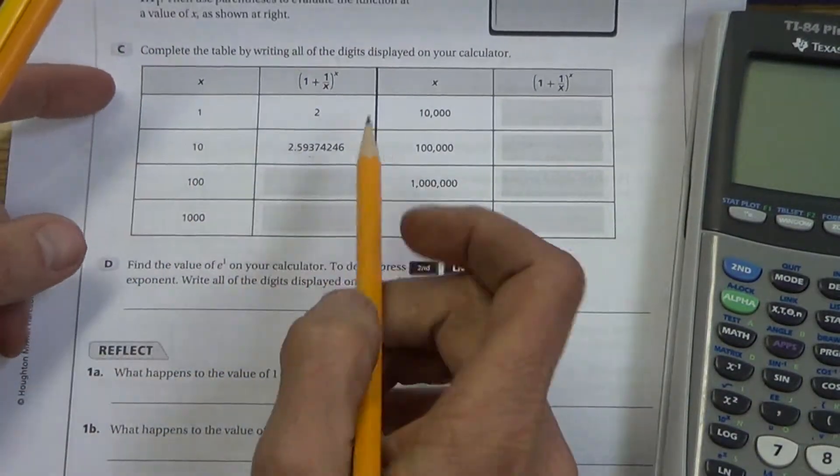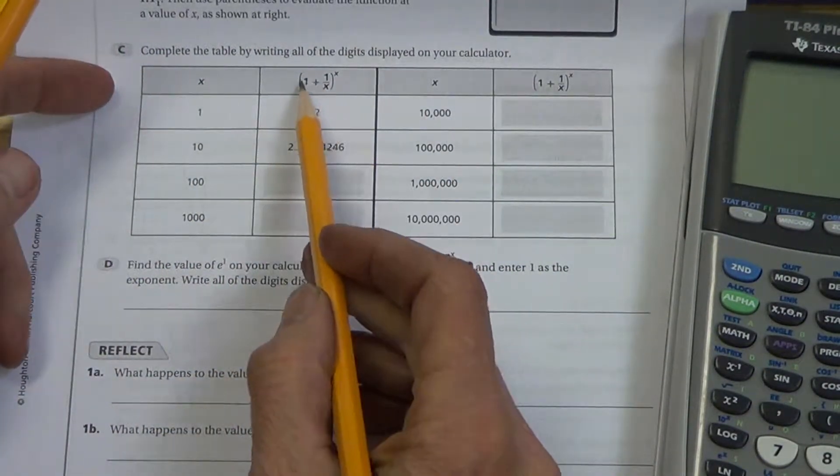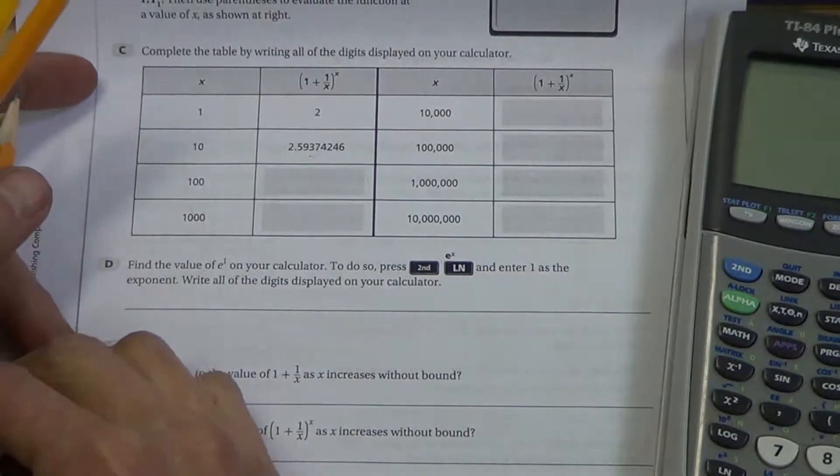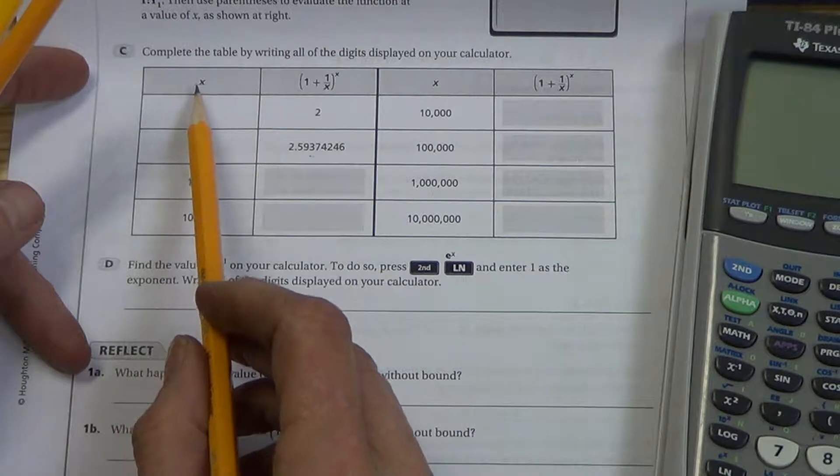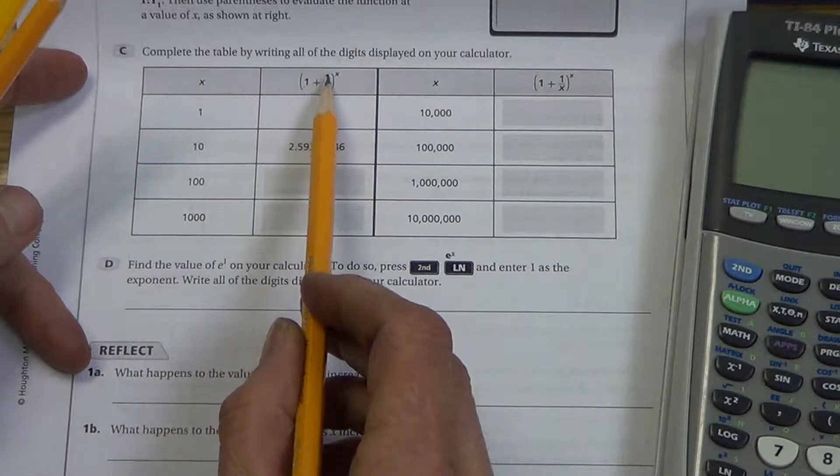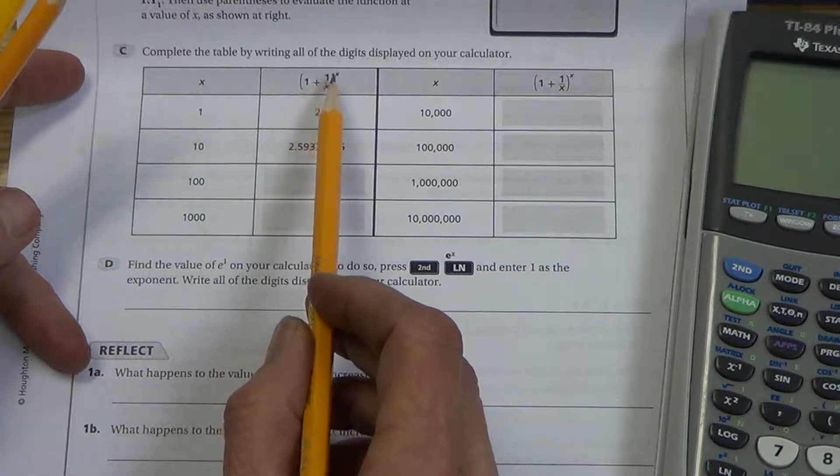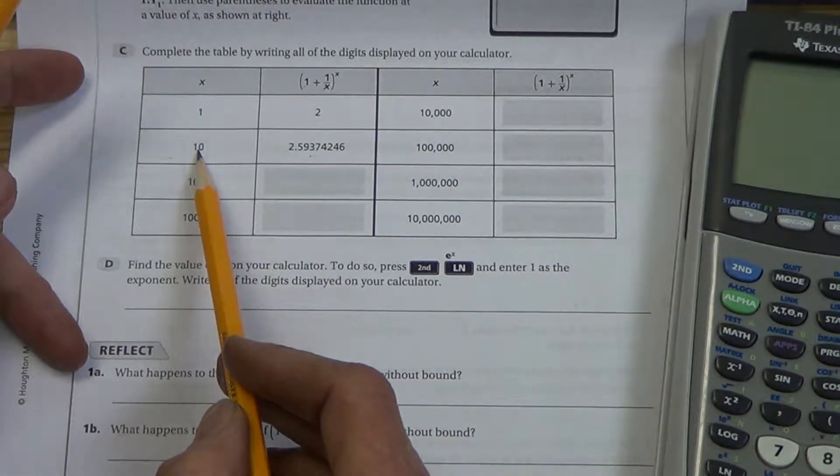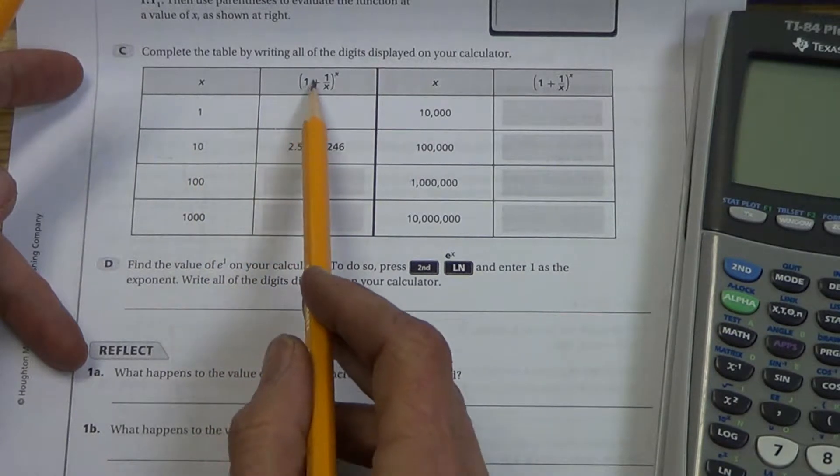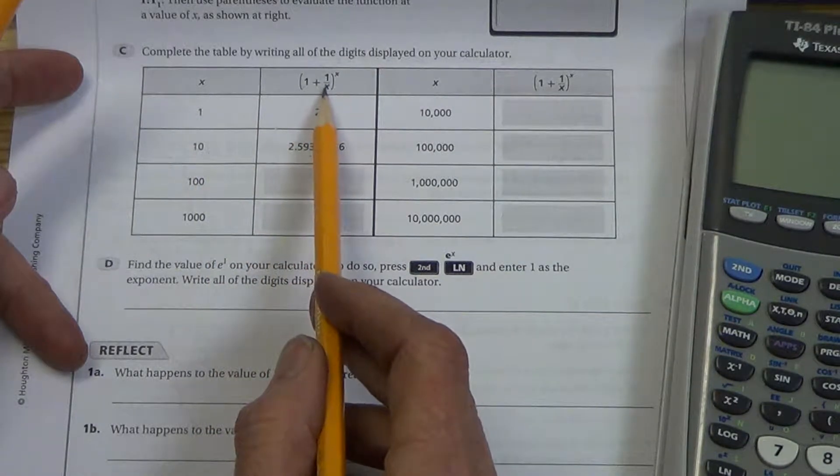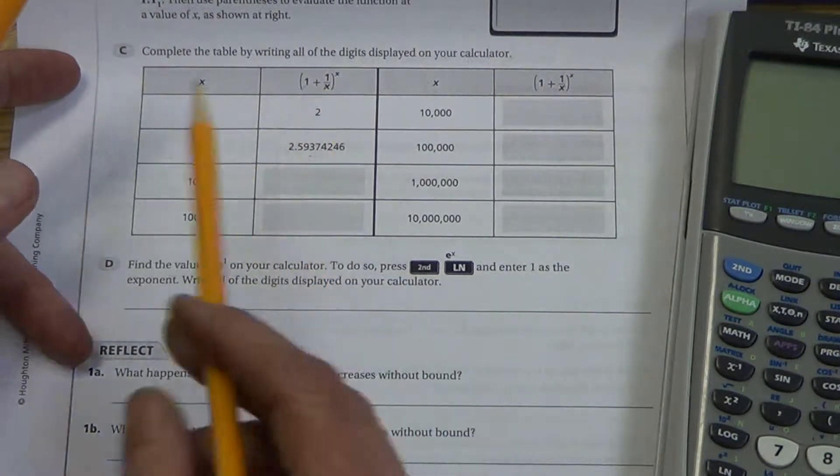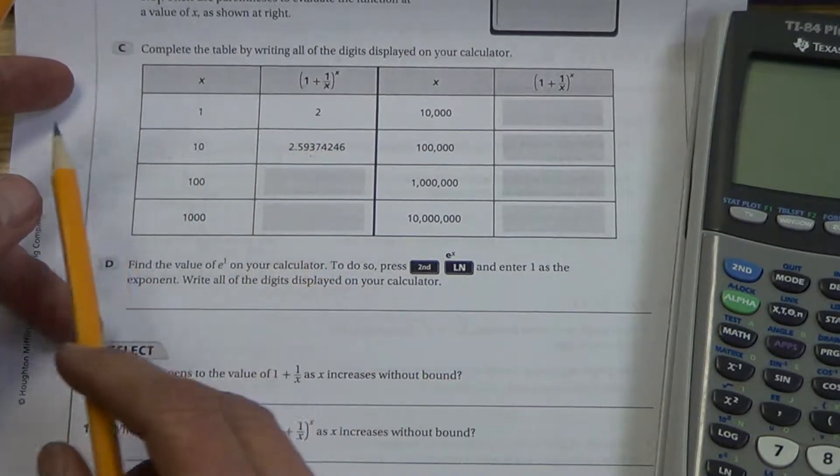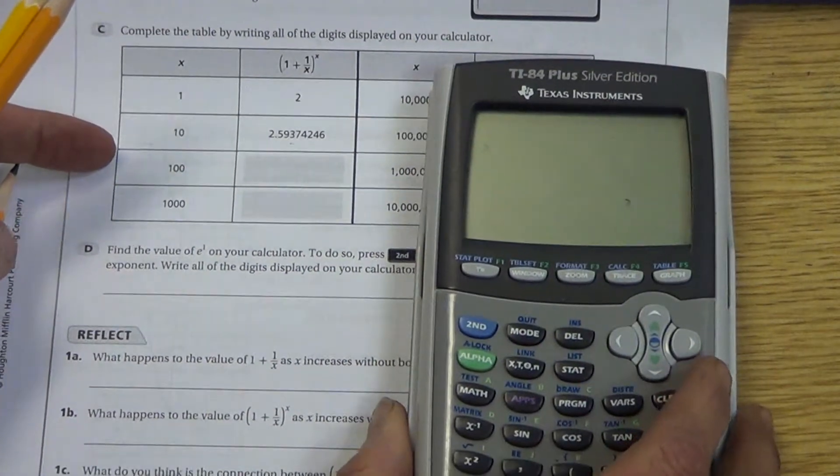They give us, this should look familiar from our last lesson, 1 plus 1 over x raised to the x. Now they're going to say, let's make x equal to 1. So we plug that in there, 1 plus 1 over 1 would be 2, raised to the first would be 2. Now what happens if that increases? So it's 1 plus 1 tenth raised to the 10, that would be 1.1 raised to the 10, we get 2.5937. Let's watch for a pattern here.